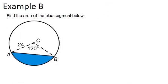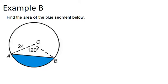In example B, it says find the area of the blue segment below. So, our strategy will be this. To find the area of the segment, we should first find the area of the whole sector, and subtract the area of the triangle.